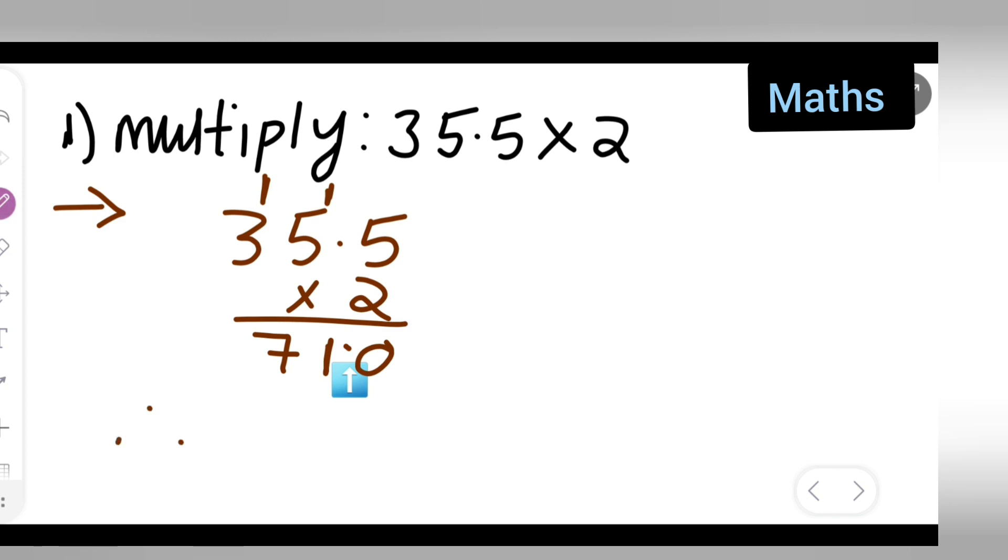Write down: 35.5 multiplied by 2 is equal to 71. So your answer is 71. I hope you all have understood how to multiply the given number with the decimal point. Thanks for watching.